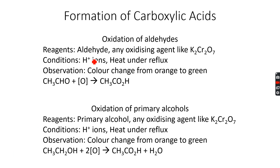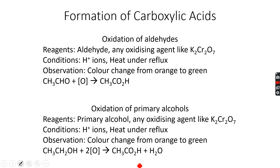Let's move to the formation of carboxylic acids. When an alcohol oxidizes it forms an aldehyde, and then the aldehyde oxidizes further to form a carboxylic acid. So oxidation of aldehydes gives us the carboxylic acid — for example, from ethanol we get ethanoic acid. Direct oxidation of primary alcohols under reflux without distilling off the aldehyde will also give the carboxylic acid.